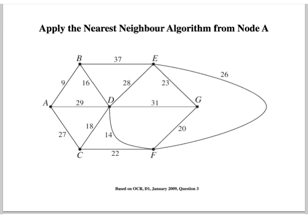Okay, so we're going to apply the nearest neighbour algorithm from node A. We're going to be starting there, and literally all we do is look at the weights of the arcs coming off A. So it's 9, 29, 27, and we choose the least. So we go A to B, which is 9. We then get there, and again we have to examine the weights of the arcs. So we're at B, and we've got a choice of 37 or 16. We choose the least, and we go down to D.